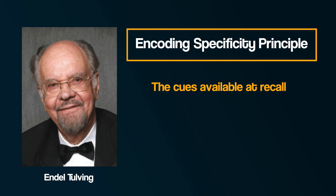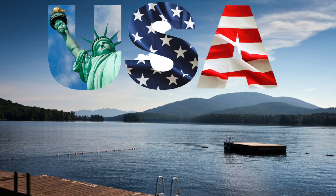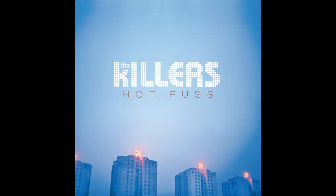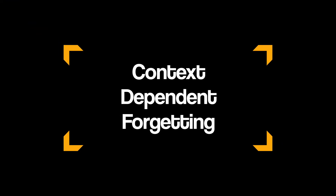This simply means that the cues available at recall need to be the same specific cues that were there at learning — when we first encoded the memory. For example, after finishing my first year at university I spent the summer in the USA with Camp America. The soundtrack for that summer was The Killers album Hot Fuss, everywhere we went that album was on repeat. Now even many years later, when I hear one of their songs it can provide a cue to bring back loads of memories from that great summer.